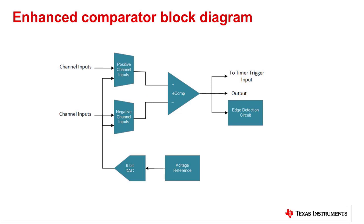There are two instances of the eComp module in the device. One eComp module is designed for fast performance, providing a 100 nanosecond response time. The other module is designed for low power consumption, providing a 1 microsecond response time while drawing only 1.5 microamps.